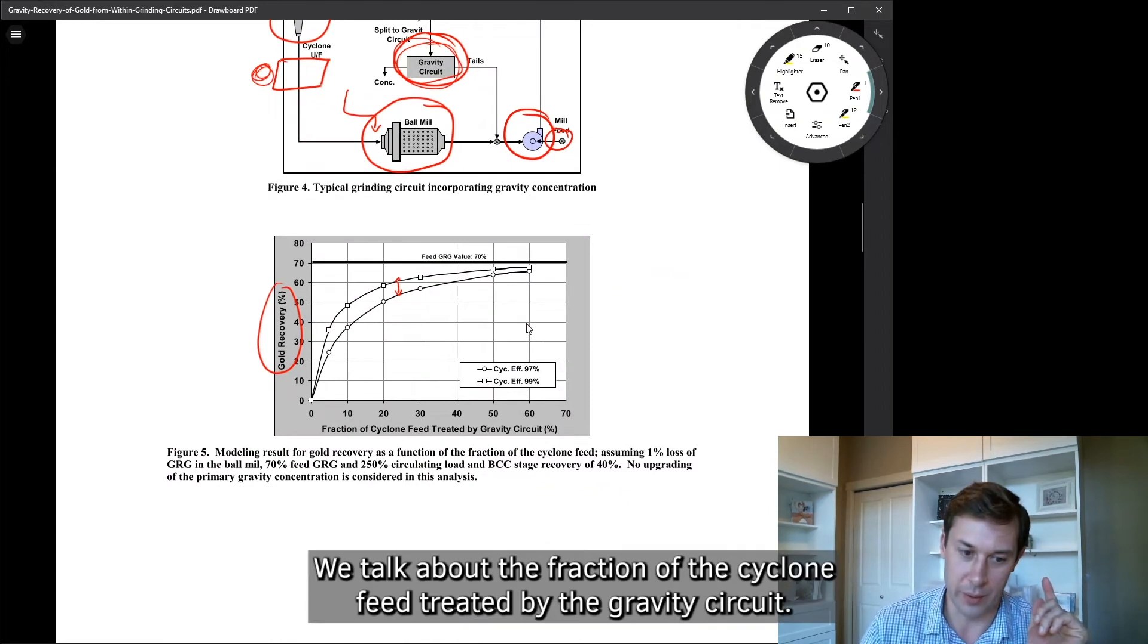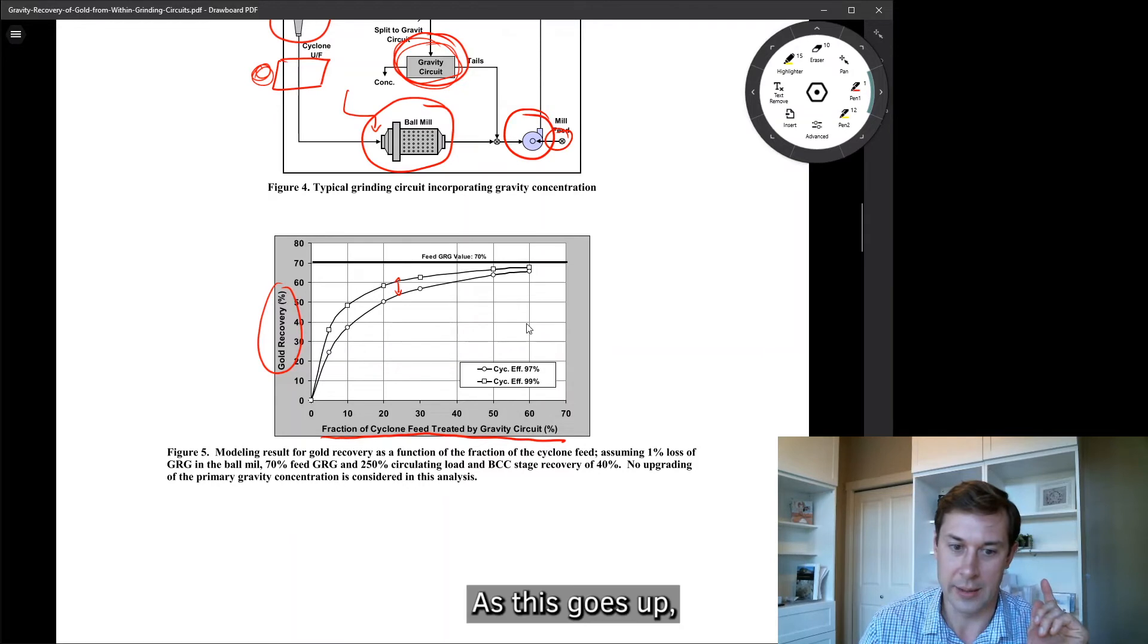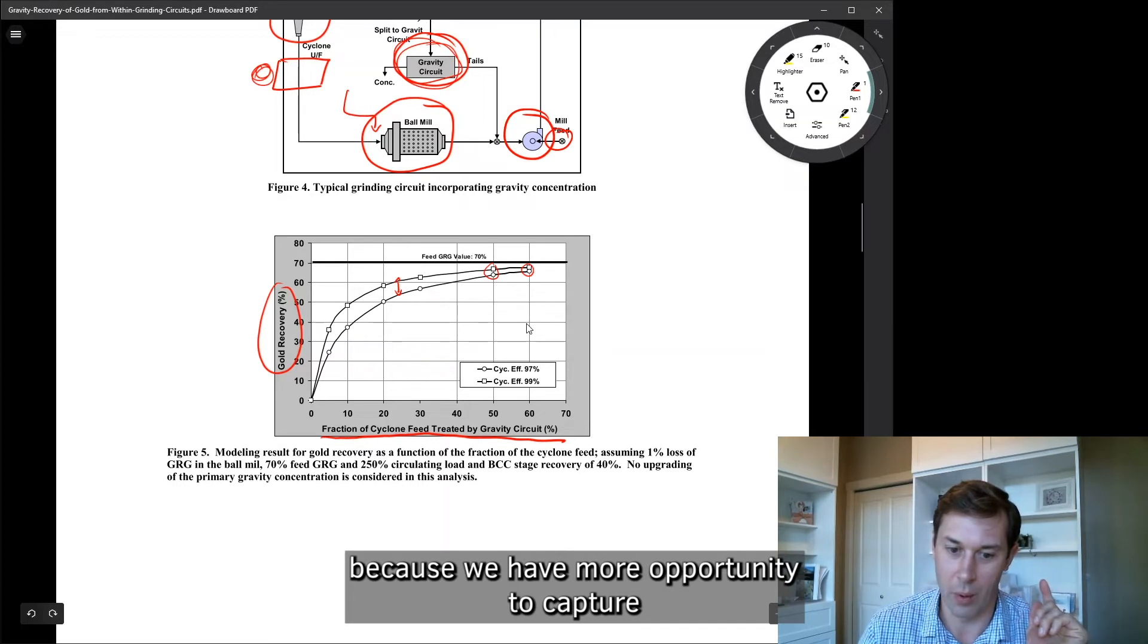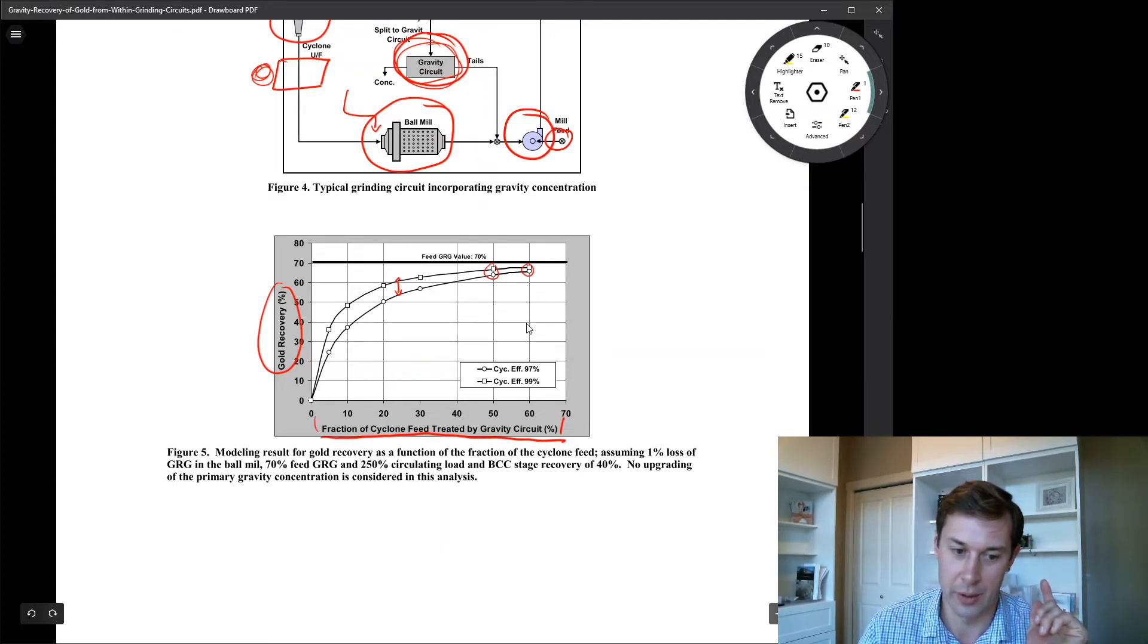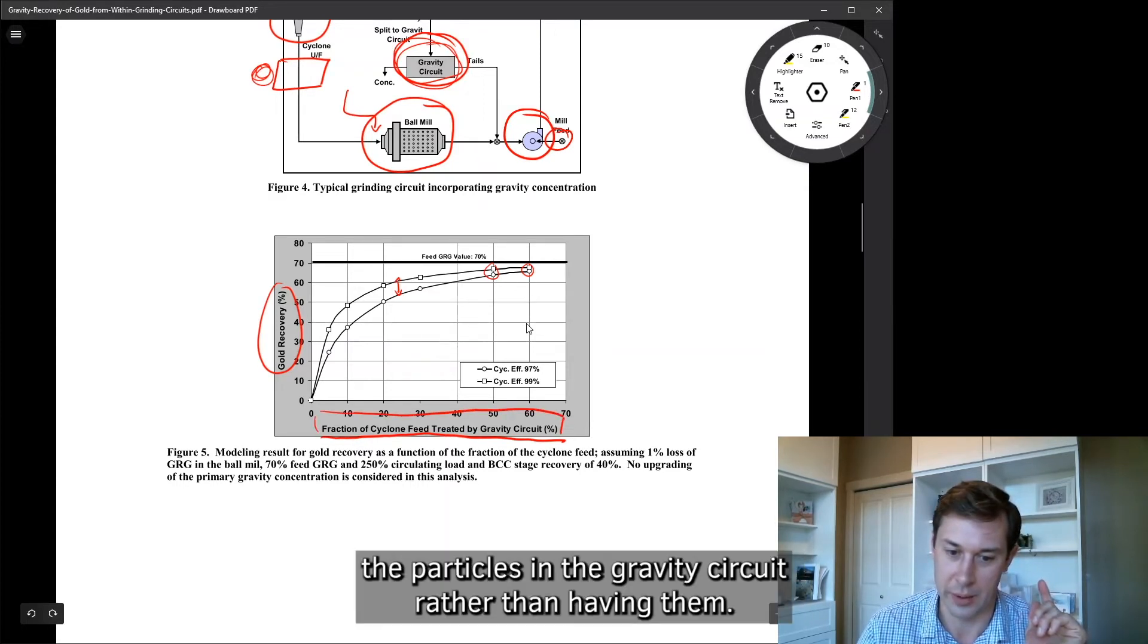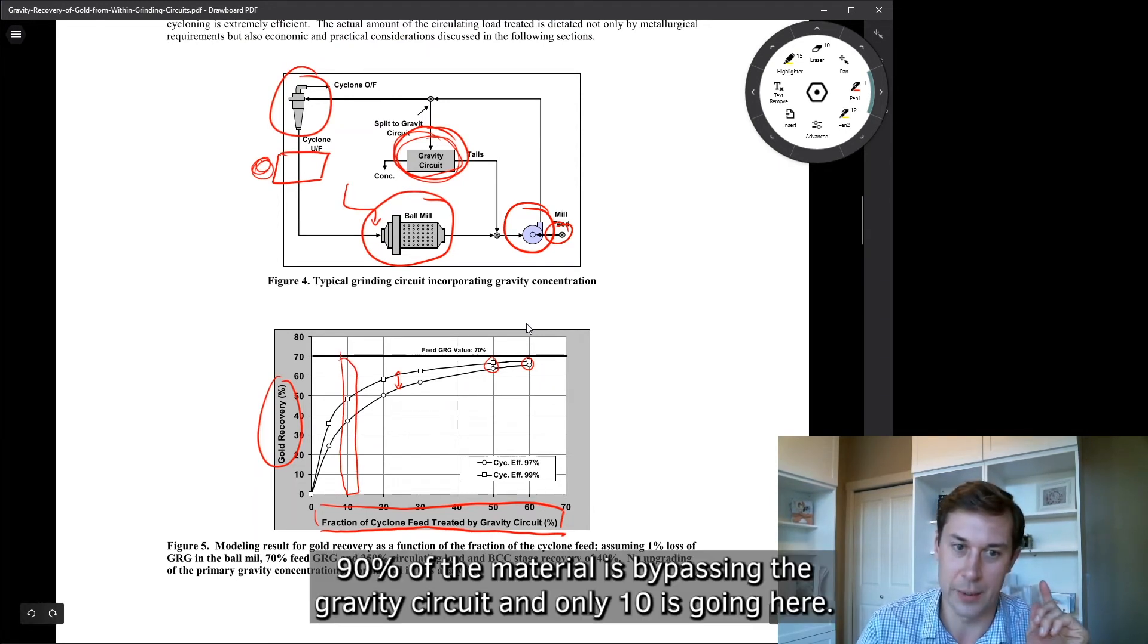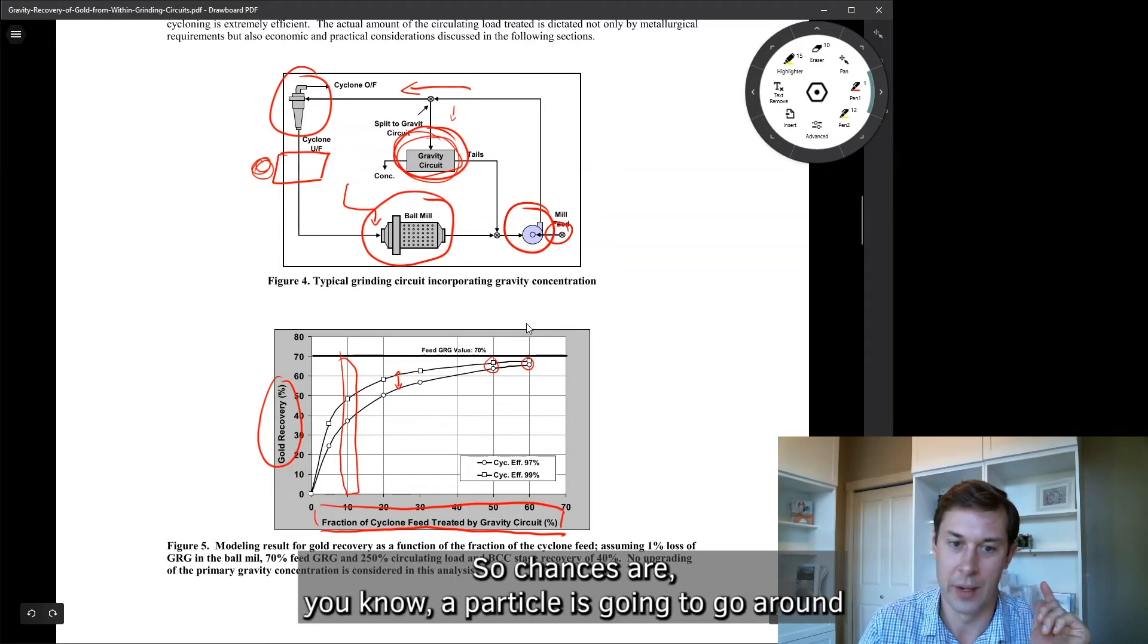And it also affects what we see here. We talked about the fraction of the cyclone feed treated by the gravity circuit. As this goes up, then the cyclone efficiency becomes less important because we have more opportunity to capture the particles in the gravity circuit rather than having them. So for example, if we're only treating 10% of the circulating load, 90% of the material is bypassing the gravity circuit and only 10% is going here. So chances are a particle is going to go around the circuit a number of times without seeing the gravity concentrator.